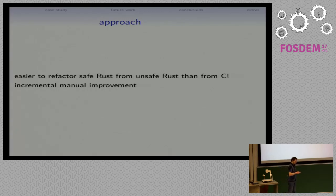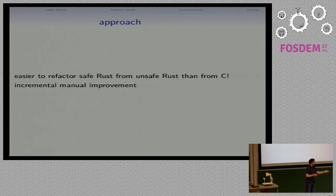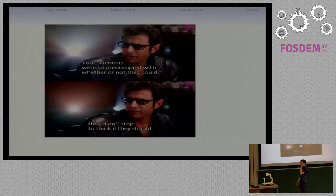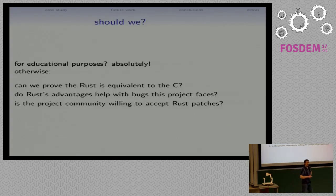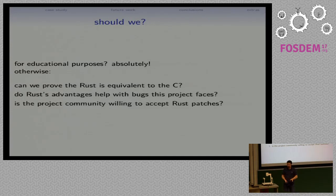Alright, so we have some tool that can automatically get us from C to Rust. Now we can go translate everything, right? Well, should we? Is this a good idea? I'm going to suggest some principles here. First of all, if you just want to translate something from C to Rust in order to learn something, by all means absolutely do this. It is an excellent exercise — you will learn a ton. I highly recommend it. I have certainly learned a ton just building Corrode.